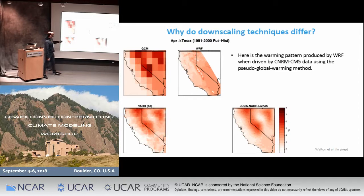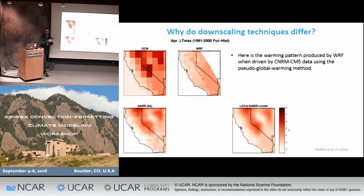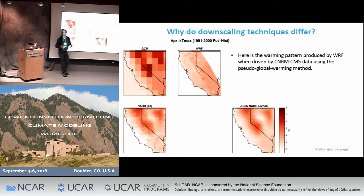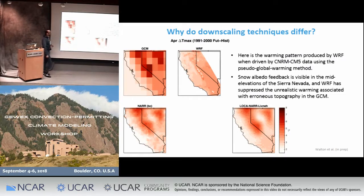Here is the warming pattern produced by WRF when driven by this same global model using the PGW method. It's pretty fascinating: the domain is large enough that WRF actually fixes the erroneous warming in the global model — we don't have this elevated warming where the global model thinks there's snow albedo feedback. And on top of that, WRF puts the snow albedo feedback in the right place where the snow margin is actually located. These warming patterns are actually very different, and it's quite interesting that dynamical downscaling is able to fix these obvious issues in the GCM.